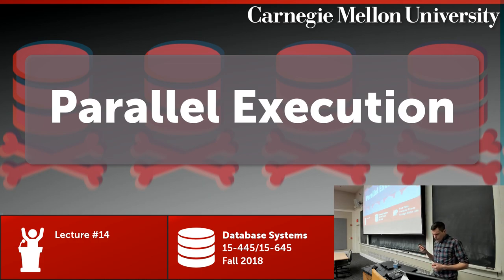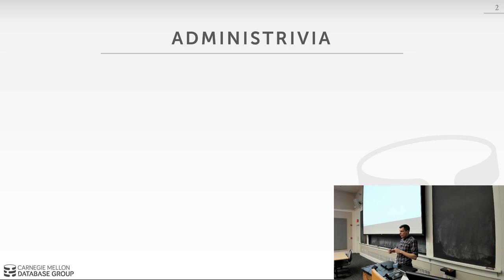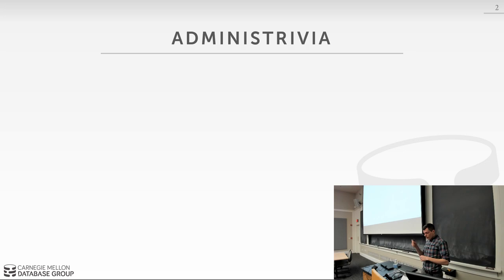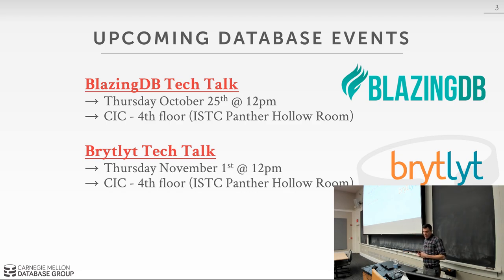Today's topic is parallel execution. What's missing on the slides is that I'll send an announcement on Piazza. Given that people are struggling with the second project, I bumped a bunch of the other deadlines to give you more time. Homework four will be due about a week later than normal, and same thing for projects three and four. For the database talks in the next two weeks, on Thursday the guys from BlazingDB down in Texas are coming up to give a tech talk, and Brightlight from London or Norway is coming on November 1st. I'll send an announcement about that on Piazza.